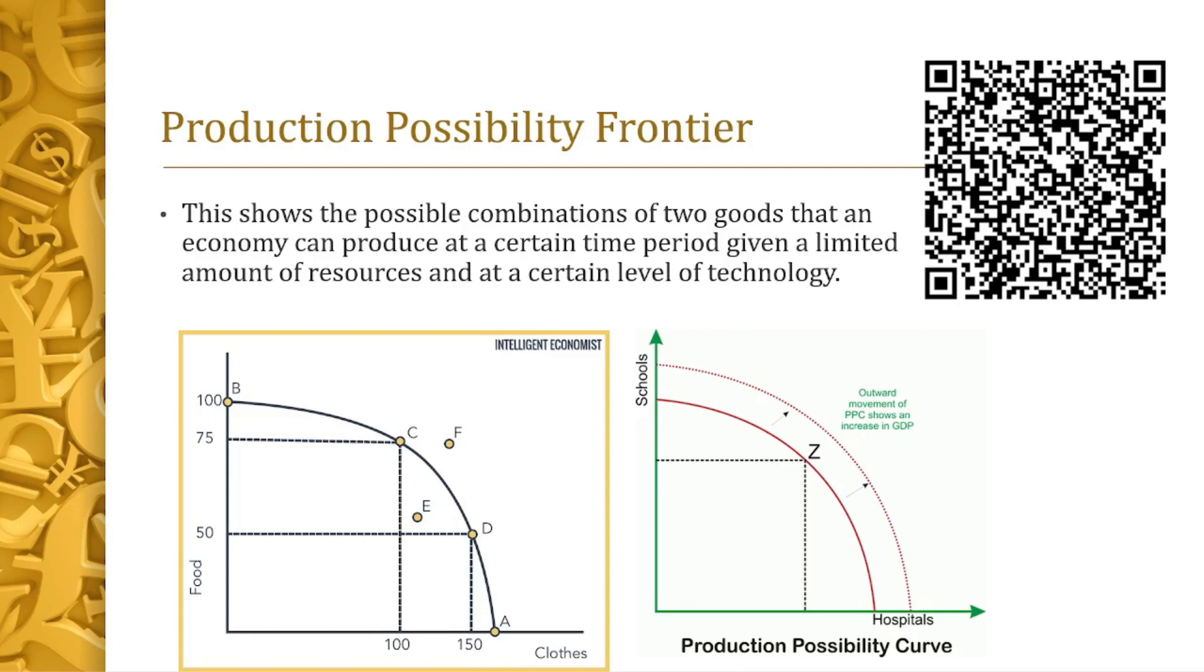In the graph displayed on your screen, represented by green arrows, the solid line is the previous gross domestic product. The broken red lines are a representation of the growth of the gross domestic product, which means when there is an increase, it expands the production possibilities frontier, which would in turn produce more capabilities for us to manufacture both food and clothes, based on our example.